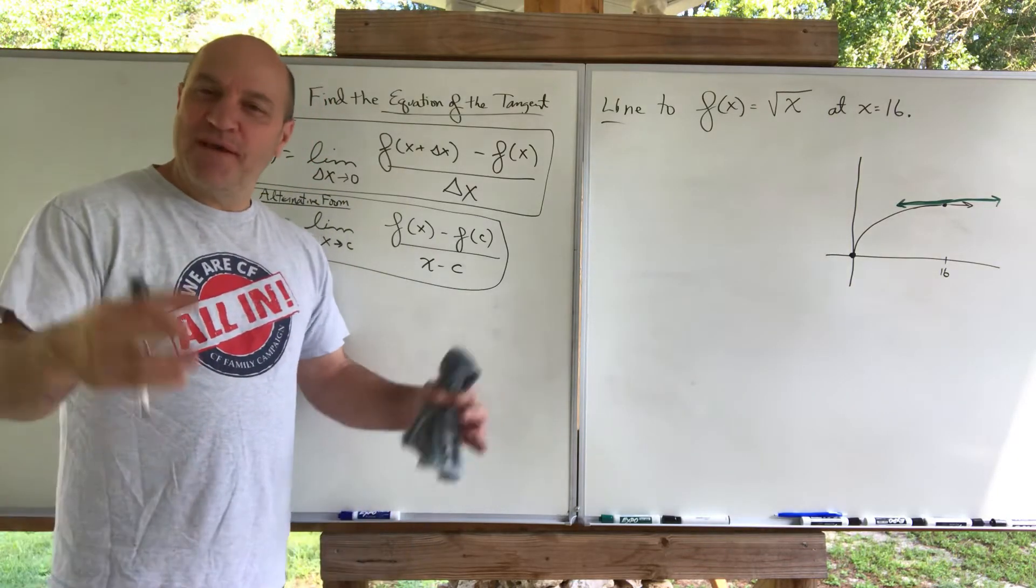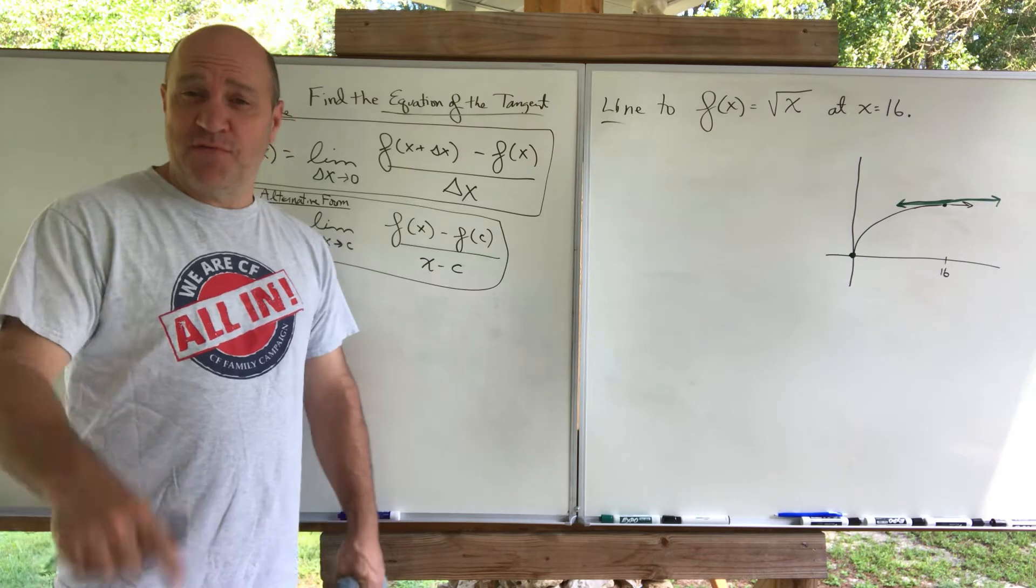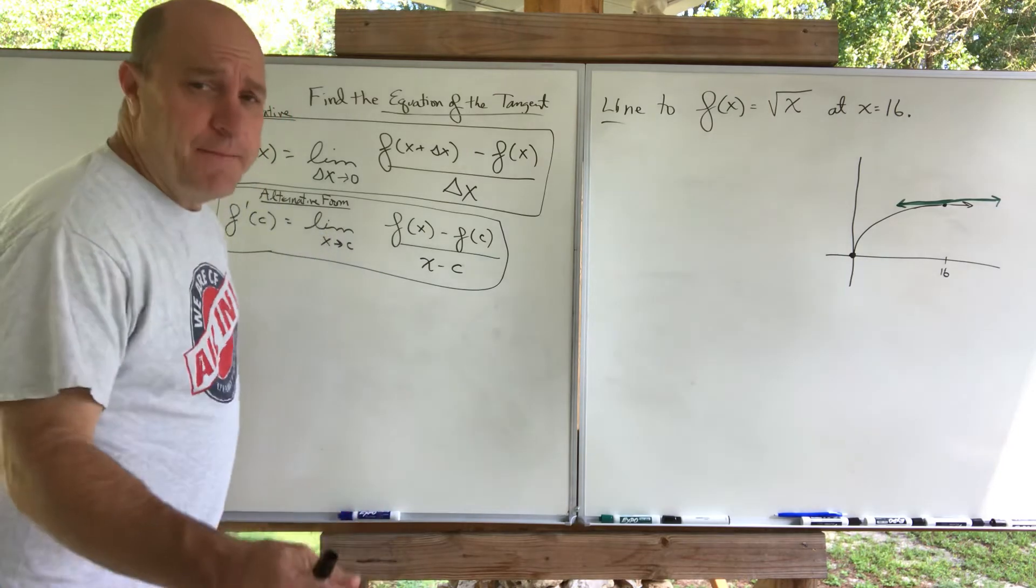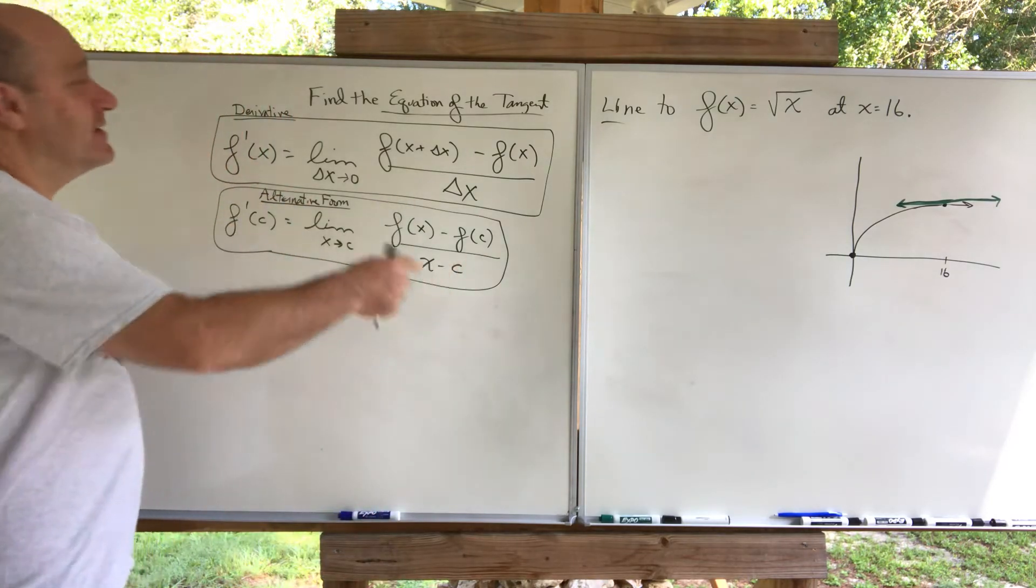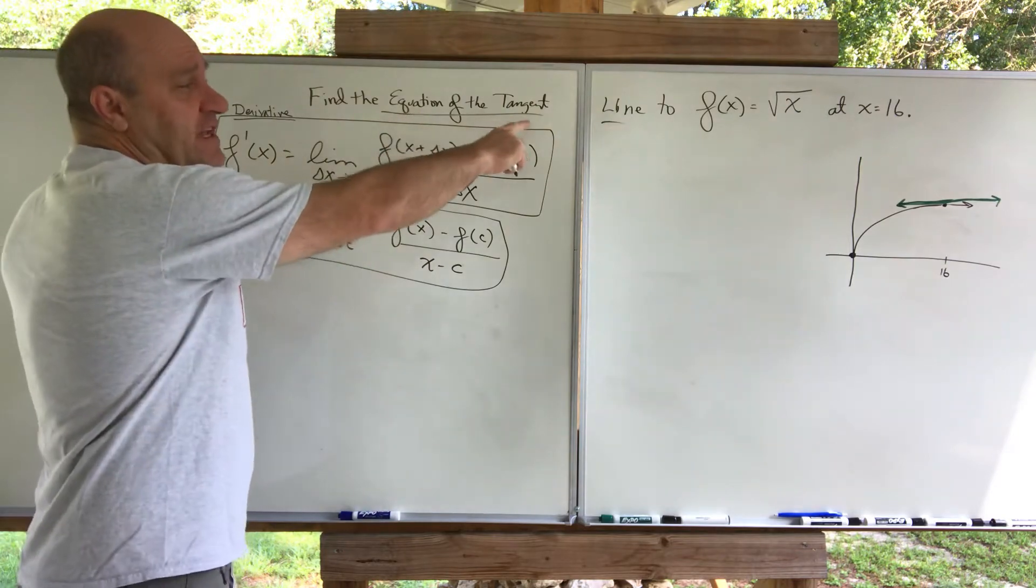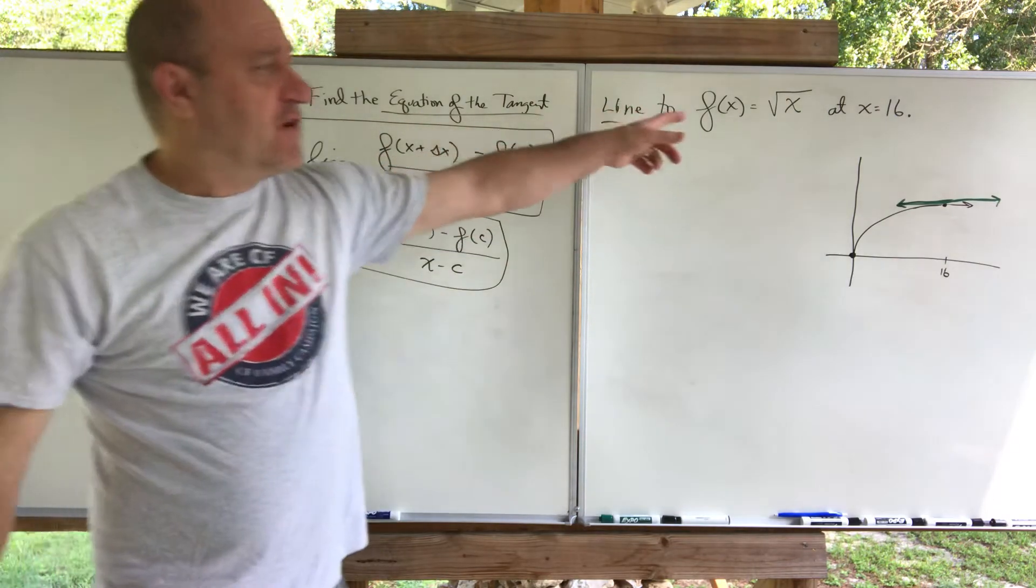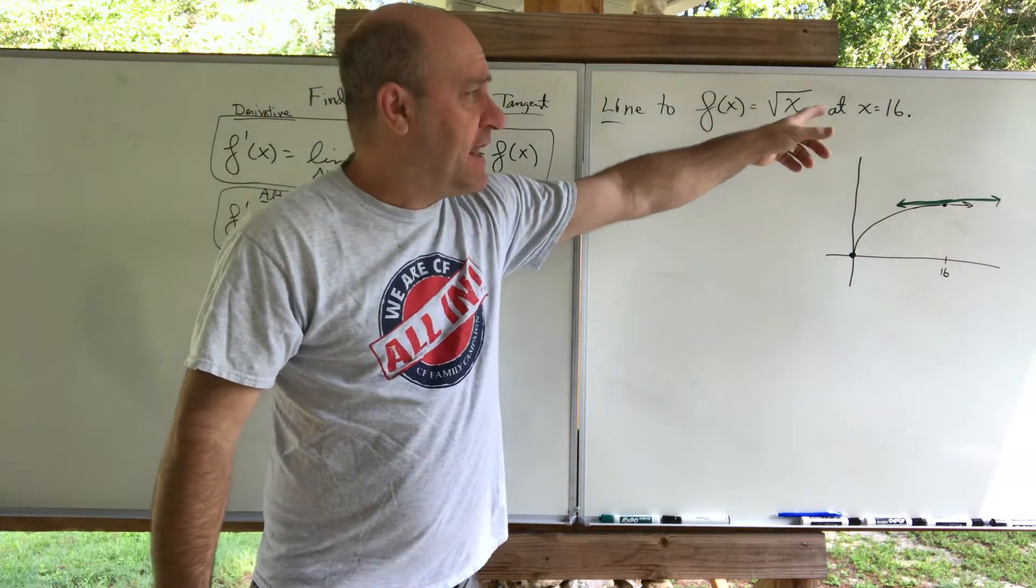Hey, good morning calculus. I wanted to help you with another derivative question from 3.1. This question is, find the equation of the tangent line to this function, square root of x, at x equals 16.